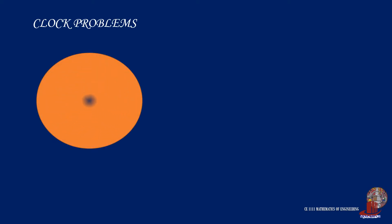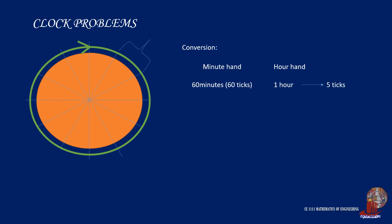In clock problems, we start by analyzing the movement of the hands, the hour and the minute hands. With one full revolution of the minute hand, meaning it moves 360 degrees or 60 minutes, the hour hand would have moved 1 hour which is equivalent to 5 ticks or 5 minutes.